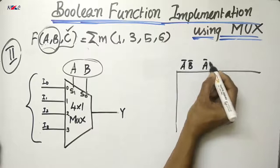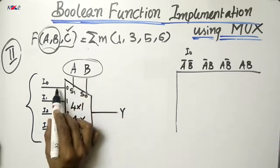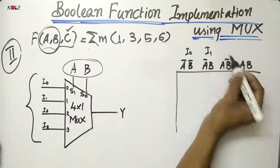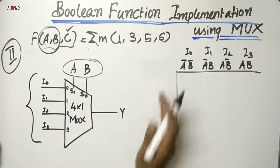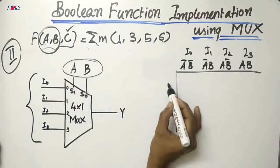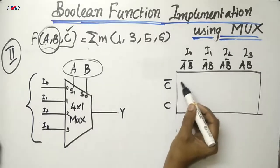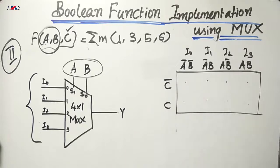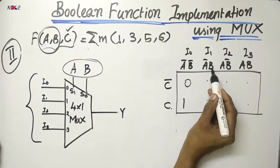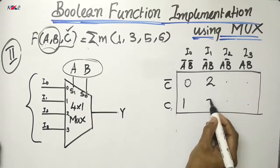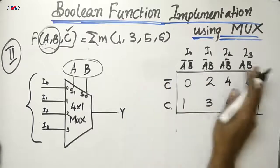In the table, we apply all combinations of A and B on the two select lines. The combinations are: A-bar B-bar, A-bar B, A B-bar, and AB. Each combination corresponds to one input terminal: I0, I1, I2, I3. We mark the min terms 0 through 7. A-bar B-bar C-bar is 0; A-bar B-bar C is 1; A-bar B C-bar is 2; A-bar B C is 3; and so on through 7. This table lists all min term entries.